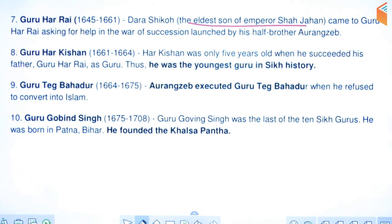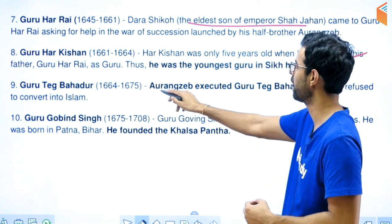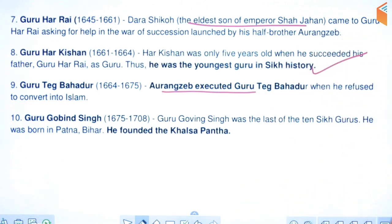Guru Hari Kishan ji came after Guru Har Rai ji and was the youngest Guru in the history of Sikhism. Guru Teg Bahadur ji was executed by Aurangzeb because he refused to convert to Islam. He also did significant work for the poor and underprivileged.